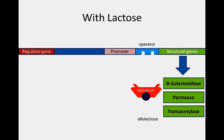However, repressor-mediated transcription control of the lac operon only tells half of the story. Even if lactose is present, beta-galactosidase, permease, and transacetylase will not be produced if another more desirable energy source is available. Because glucose is preferable to lactose, it would be a waste of energy to produce the tools for dealing with lactose only to then use glucose instead.